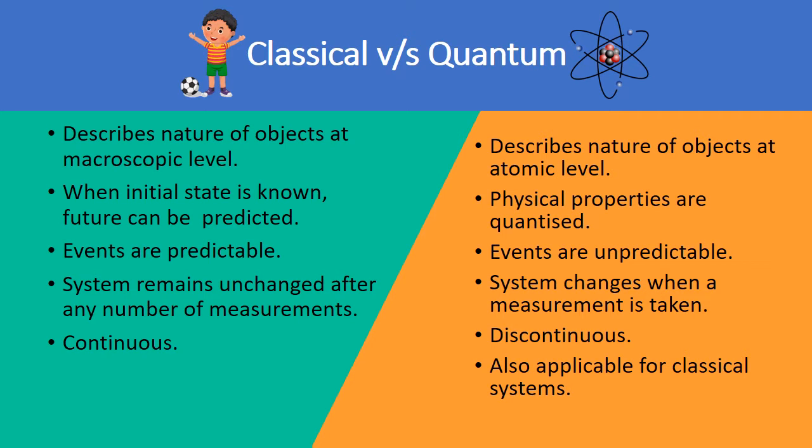In classical mechanics, we can take a number of measurements on a system without disturbing the system. While in quantum mechanics, if we measure a system, that system will no longer be the same. The system will change when a measurement is made to it. The most important difference is that classical mechanics talks about the continuous world while quantum world is always discrete and discontinuous. The quantum mechanics is also applicable for classical systems also while classical mechanics cannot explain the quantum world.